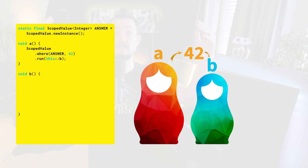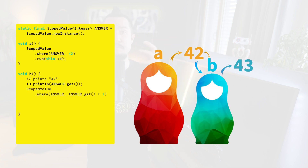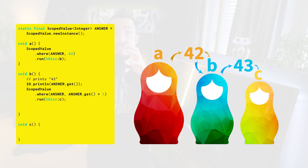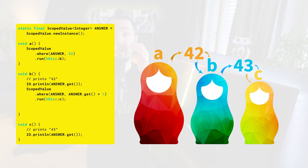That said, code can rebind the scope values for its callees. Think of it as nested scopes: method A binds 42 and then calls method B. B can get 42 from the scope value, rebind it to say 43, and then call method C. When C calls get, it reads 43 — no way to see 42, and also no way to write anything to the scope value that the outer scope B can observe.